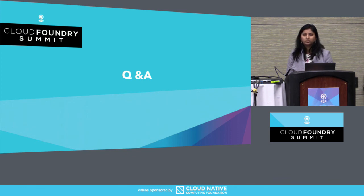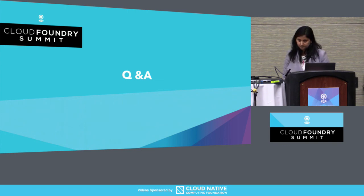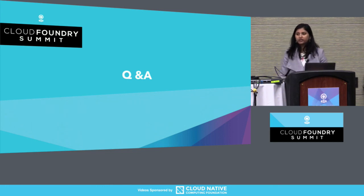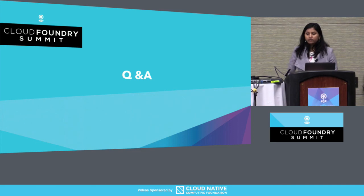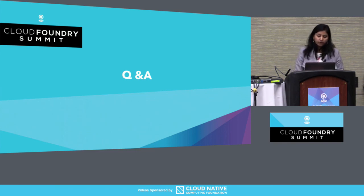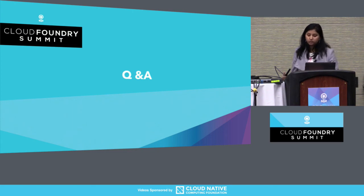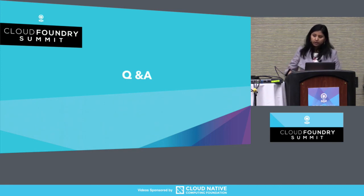Q: Is the reference architecture something on the roadmap or are you asking for feedback? A: It's on the roadmap because we want to test out what we propose and make sure it can work at enterprise scale in a multi-cloud environment. The point of creating the reference architecture in the open source is to help the community, and then we'd like to take it on the Pivotal side and weave it into our enterprise offering so that Pivotal customers get that support out of the box.